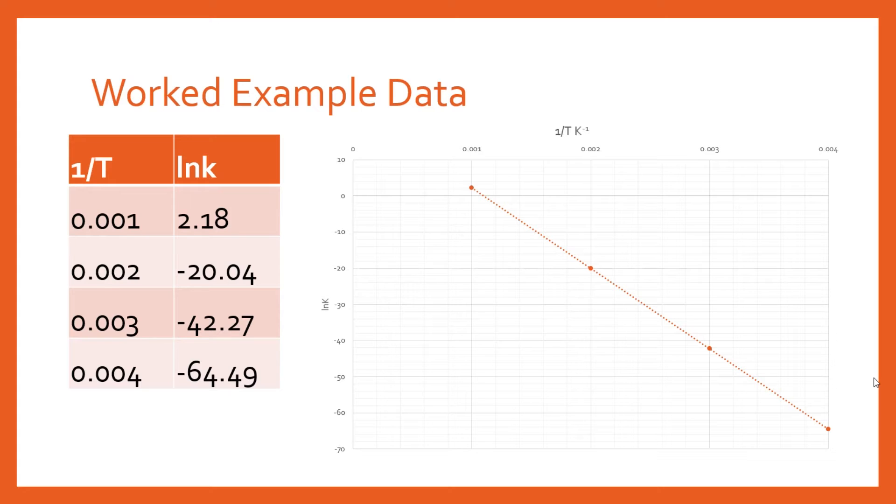So here's some worked example data. Let's imagine you've done an experiment at lots of different temperatures and you've calculated your inverse temperature, so one over your temperature. Then for each temperature, you've worked out the value for the rate constant k. What you need to do is calculate the natural logarithm of k and then get a range of values here.